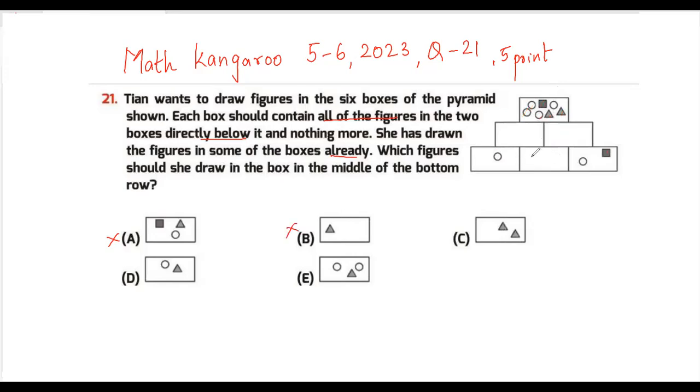I need something which has a circle and a triangle, which is option D. Let's check. I get a circle, circle, and triangle, plus a circle, circle, triangle, and square. Now I have two circles, two more circles, one triangle, two triangles, and a square. This particular top box has all the figures from the bottom two boxes, so my answer is option D.